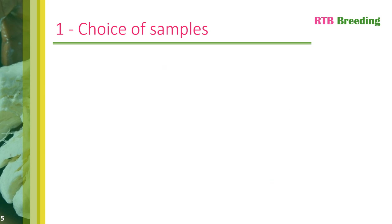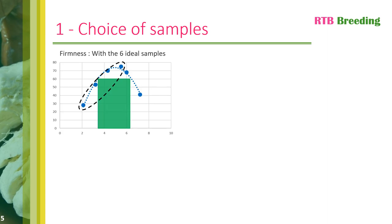I'm going to illustrate that it can be important to choose more than six samples to make sure you don't make any mistakes when interpreting the results. In this ideal example, the six samples produced nice curves for calculating the thresholds. In the top left-hand corner, you can see the curve for firmness. The six points produce a bell-shaped curve and show, in green, that for more than 60% of the population to be satisfied, the firmness has to be between around 3.5 and 6.2.